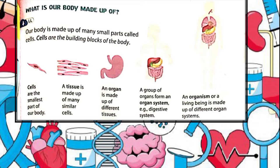An organ system is a group of organs and body parts that work together to accomplish a common goal or function in our body.